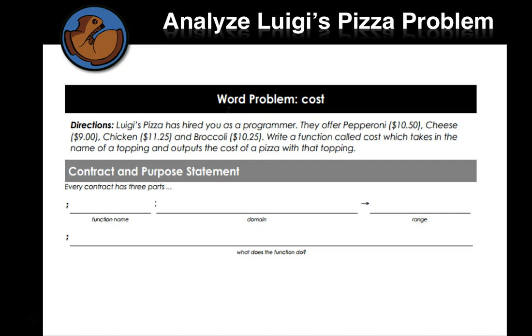So here's your page 25. Directions. Luigi's pizza has hired you as a programmer. They offer pepperoni, which costs $10.50, cheese, which costs $9, chicken, which costs $11.25, and broccoli pizza, which costs $10.25. Write a function called cost, which takes the name of the topping and outputs the cost of a pizza with that topping.